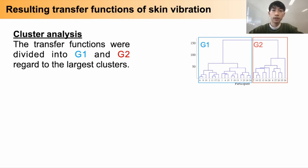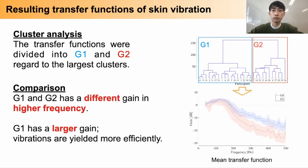This shows the mean transfer functions for each group. There is a large difference in the gain for higher frequencies between Group 1 and Group 2. Group 1 has a larger gain, indicating that vibrations are yielded more efficiently, whereas the difference in gain is smaller for lower frequencies.